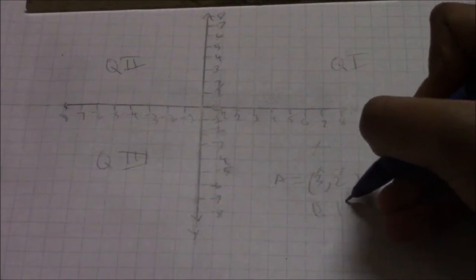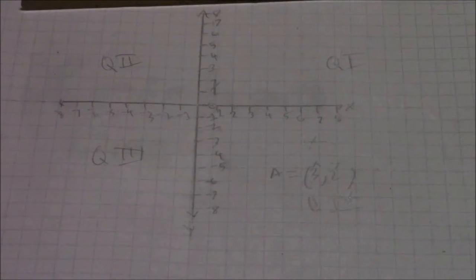To explain where (3, 2) is, we need to know what quadrant it falls in. Point A at (3, 2) is going to be in quadrant 1, because both 3 and 2 are positive numbers. So we're going to plot it here in quadrant 1.